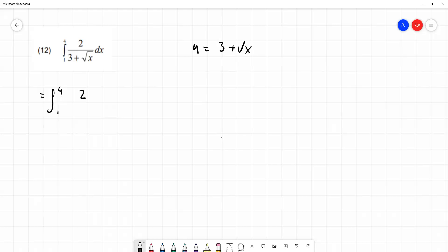We'll take u equals 3 plus root x and substitute that into our expression. So we'll integrate between 4 and 1, 2 over u dx. But of course, as ever, we need to replace our dx by du. So we're going to have du by dx, and it's going to be 0 plus half x to minus half, which is the same thing as 1 over 2 root x.